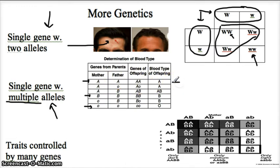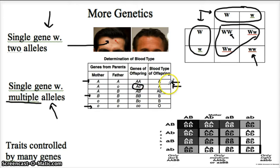If you have a mother who is A and a father who is O, the dominant A is going to win, so the child will have blood type A. They're going to be a carrier for that O, but they won't express it. In the next generation — the F2 — you have a one in four chance of having blood type O.